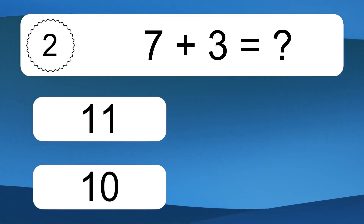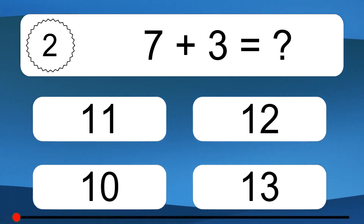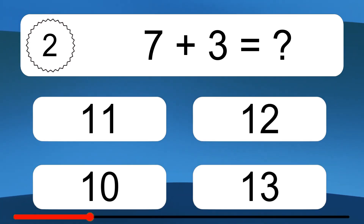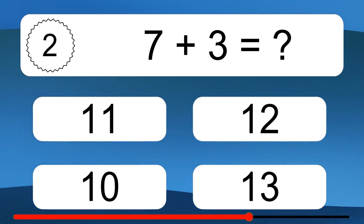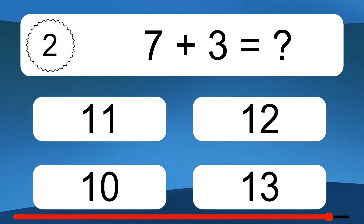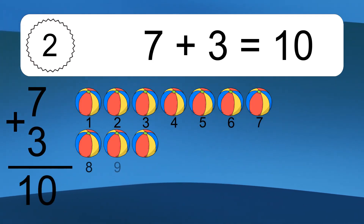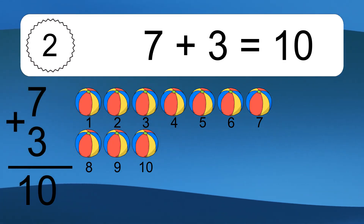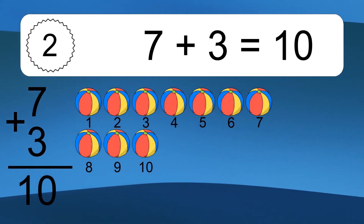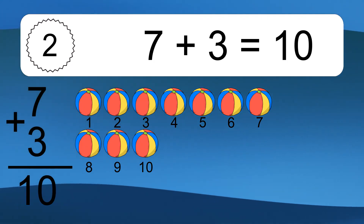7 plus 3 equals what? 7 plus 3 equals 10. Let's count it: 1, 2, 3, 4, 5, 6, 7, 8, 9, 10.